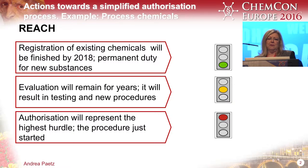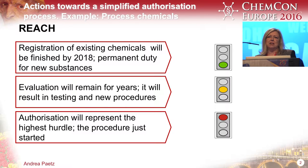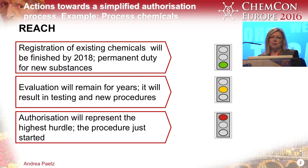Under REACH, there are always three parts. We have the registration process, we have evaluation, and we have the authorization. I want to make it very clear: registration is for us something like a green light. It's burdensome — you have to do a lot of work — but if you get the registration, you are very sure that you can produce your substances.